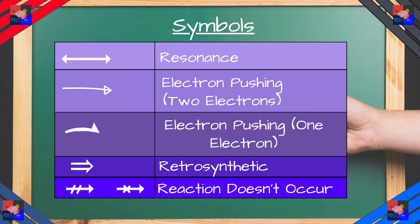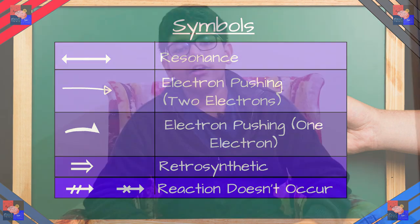That is the electron pushing arrows. And then there are a bunch of these as well. This is where there is going to be no reaction. So those are a bunch of arrows and a bunch of symbols.